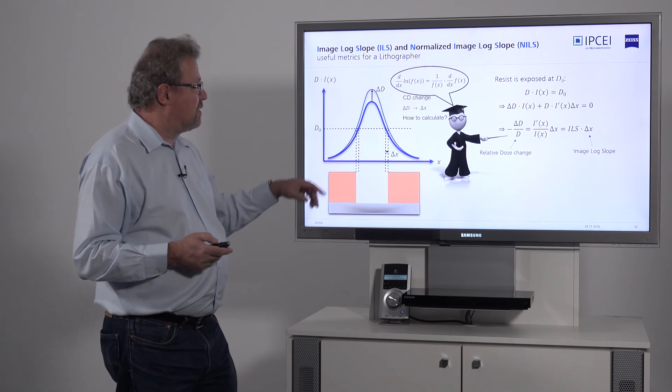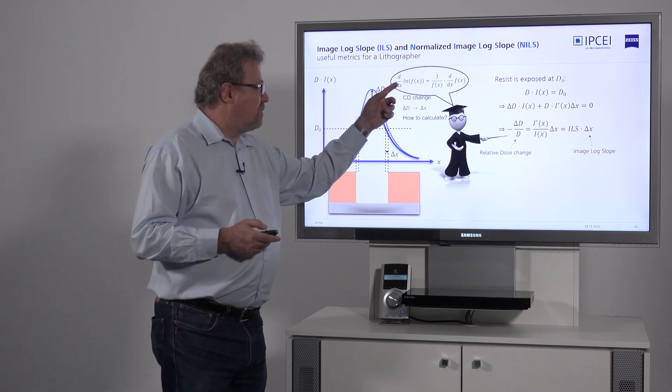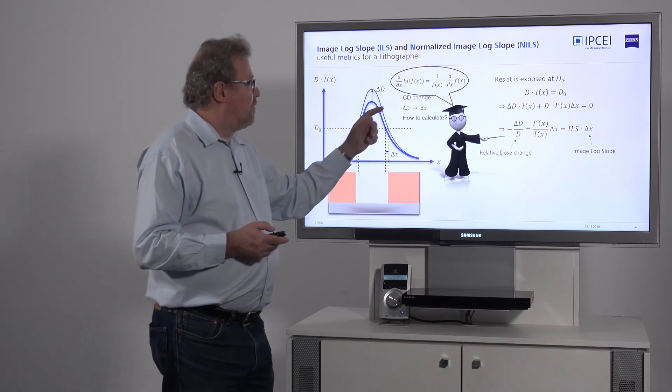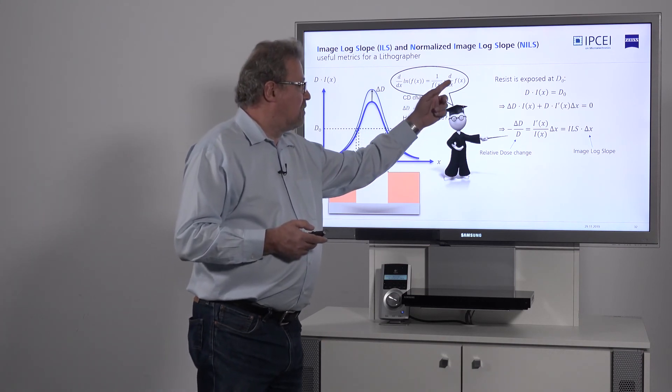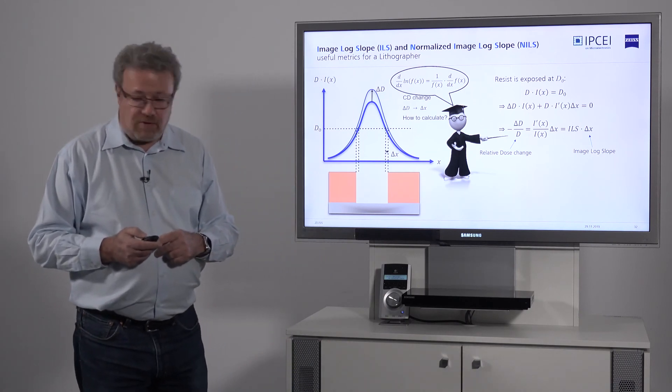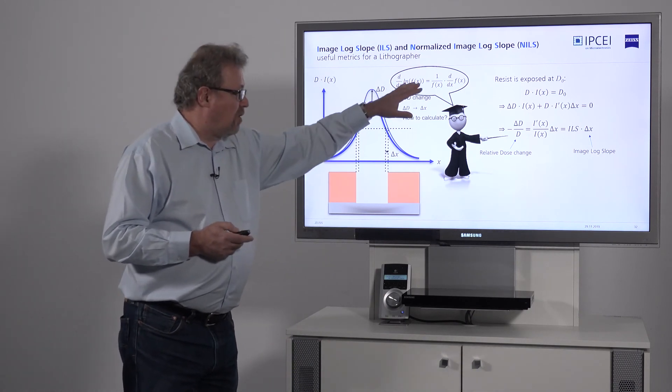Why? Because if you take the derivative of the logarithm of a function, that is the same as the derivative of the function divided by the function itself. That's why this is called log slope.